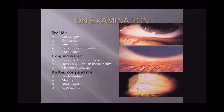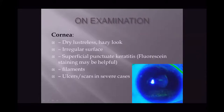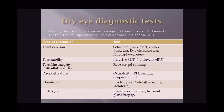During examination, the eyelids should be assessed for lid margin, lashes, infection, crusting, and lid closure. The conjunctival sac is examined for discharge, tear meniscus, debris, and mucus. The bulbar conjunctiva is checked for dryness, Bitot's spots, and hyperemia. The cornea is assessed for dryness, irregular surface, superficial punctate keratitis, filaments, and ulceration or scarring in severe cases.